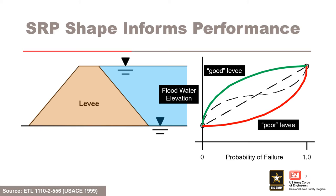As illustrated by these example curves, the conditional probability of failure could have a wide range of shapes. For a good levy, the probability of failure may remain low and reliability remain high until floodwater elevation is rather high. In contrast, a poor levy may experience greatly reduced reliability when subjected to even a small flood head. The actual curve may be closer to an S shape or intermediate curve, which is similar in shape to the good case for small floods, but reverses to approach the poor case for floods of significant height. A straight line function is also shown representing a linear relation between reliability and flood height. Linearity would not be expected to be the general case.